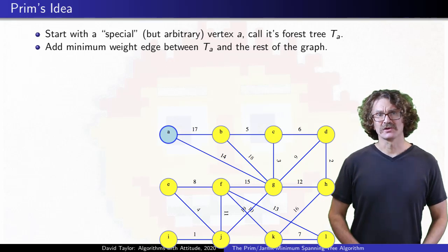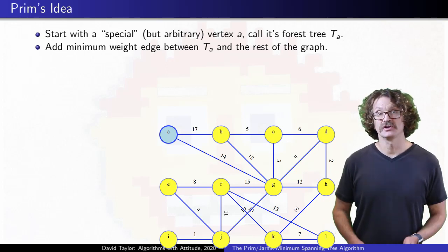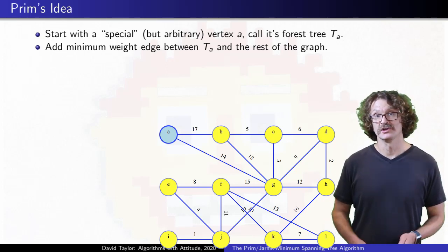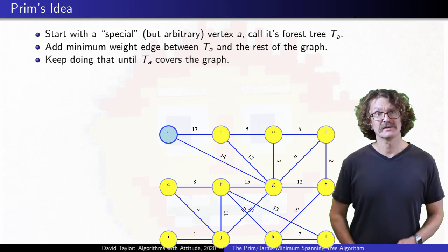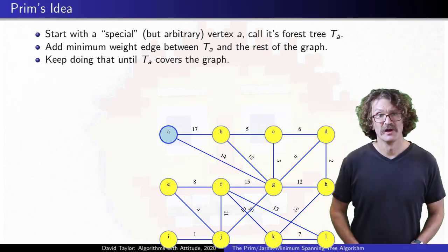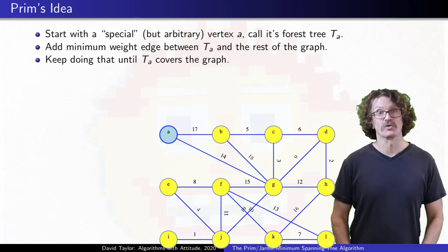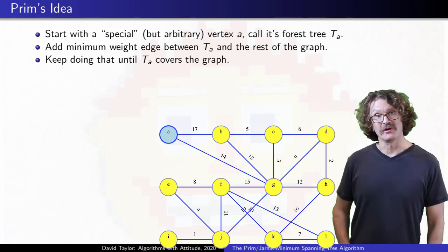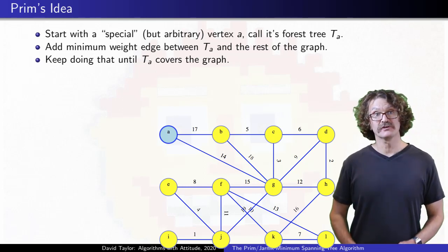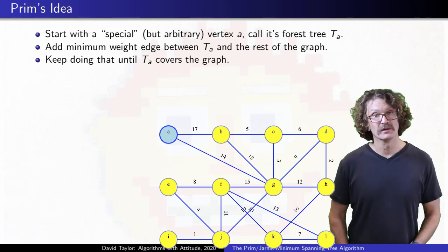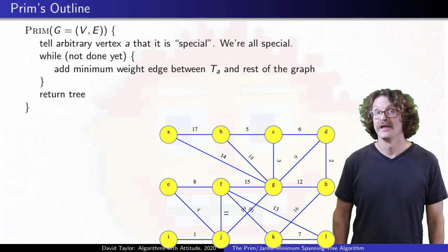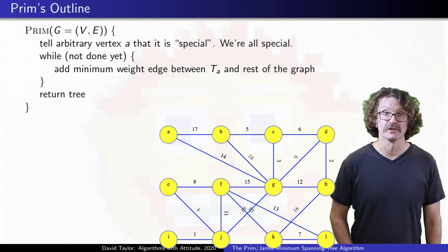It doesn't look so much like a bunch of different trees in the forest merging, it looks like a single tree, growing to take over the rest of the graph, assimilating it like the Borg would. It still fits our generic algorithm mold, but all of the trees in the forest, except one, are singleton vertices. That's Prim's general outline.